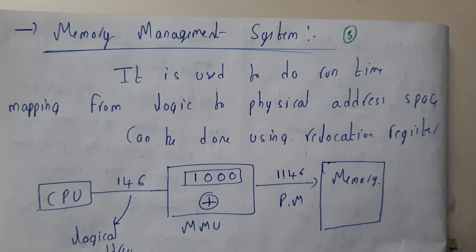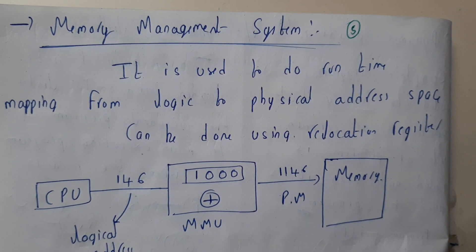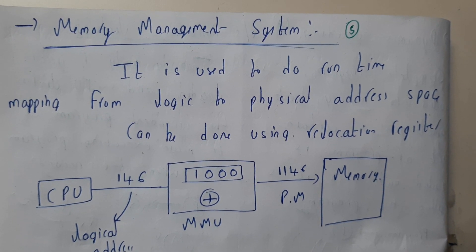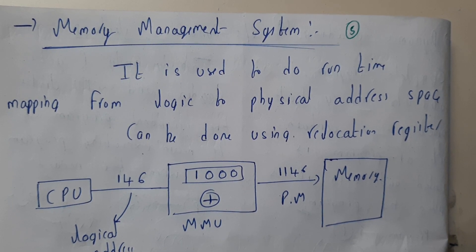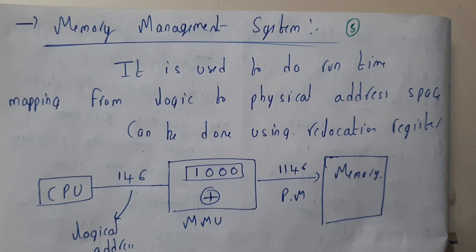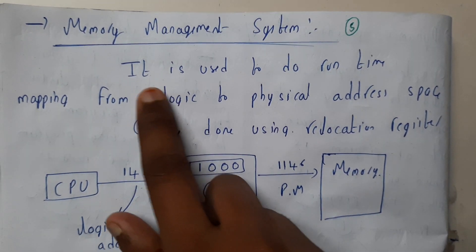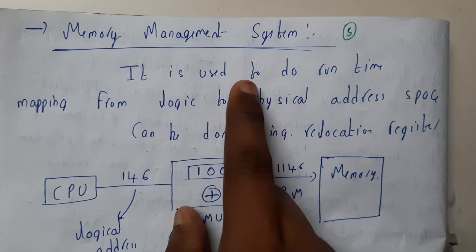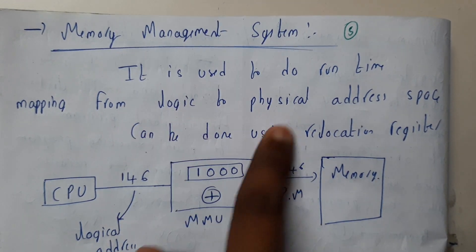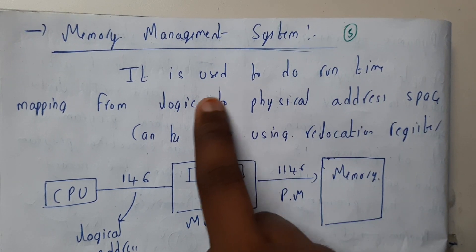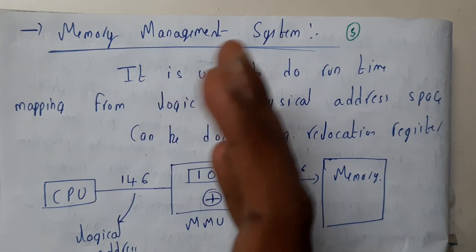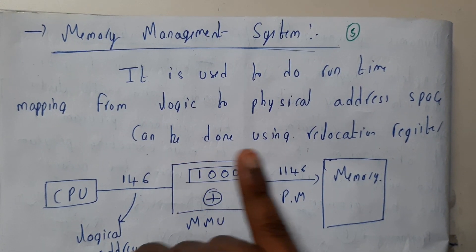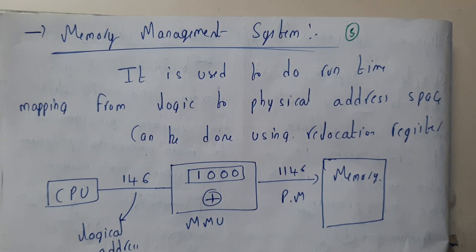Hello guys, we are back with our next tutorial. In this tutorial, let us go through the memory management system. This is a small diagram in which you will understand logical address and physical memory address. The memory management system is used to do a mapping from logical to physical address space — this is the main thing done by our memory management system. It converts the addressing spaces and stores the data, which can be done using a relocation register.